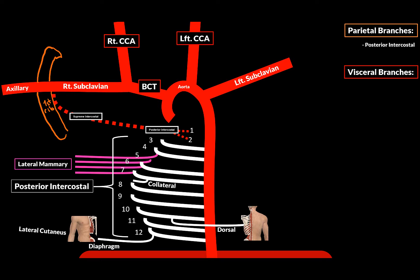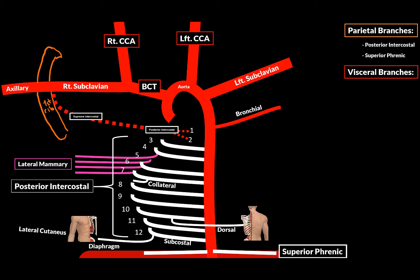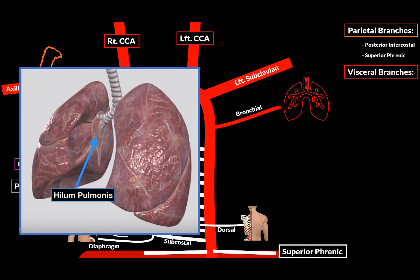Just remember that the last posterior intercostal artery is called the subcostal artery. The other parietal branch of the thoracic aorta is the superior phrenic artery that supplies the diaphragm. Now over to the visceral branches. There are four visceral branches from the thoracic aorta. The first one is the bronchial branch, and they enter the lungs through the roots of each lung at the pulmonary hilum, and supply the lungs.